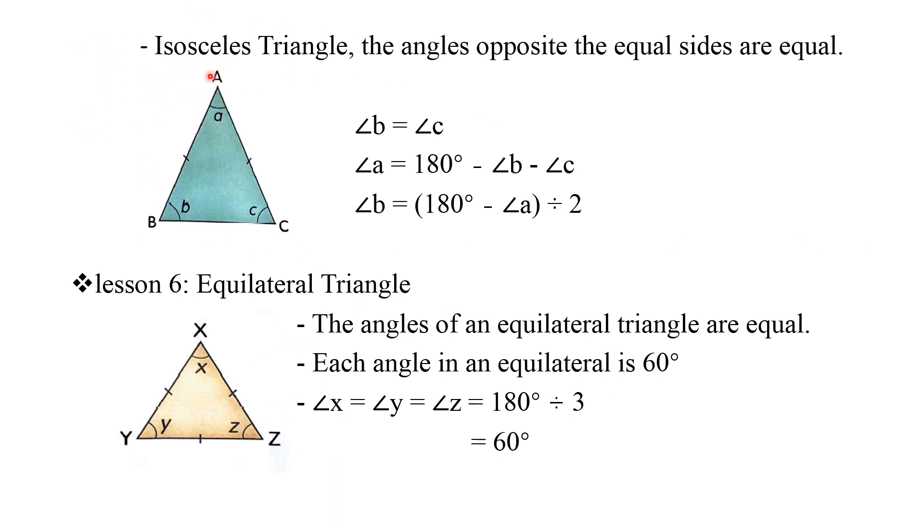So the next here is about isosceles triangles. In an isosceles triangle, the angles opposite the equal sides are equal. So, the picture that I show you here, you see angle B and angle C are opposite with the equal sides AB and AC.